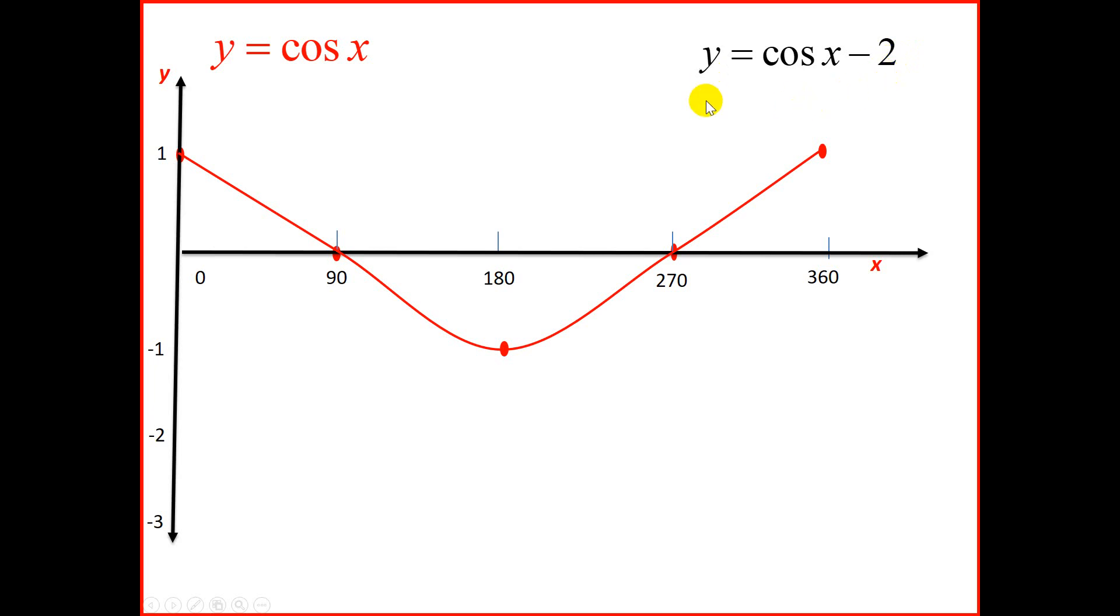So we're not going to use a calculator. We're going to take each point here and move it 2 units down. So the first point is at 1. And if we move it 2 units down, 1, 2, it goes to negative 1. The next point needs to move 2 units down. It's sitting at 0. So it should move to negative 2.